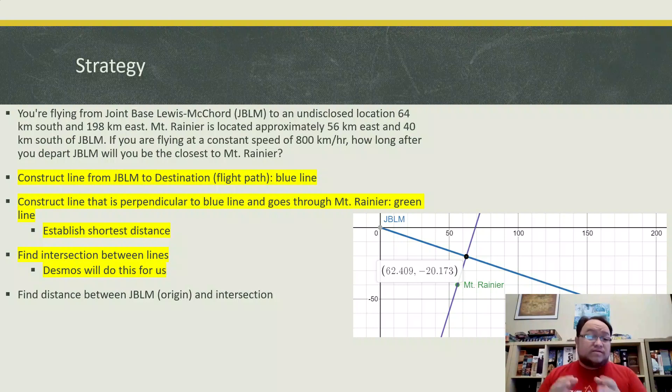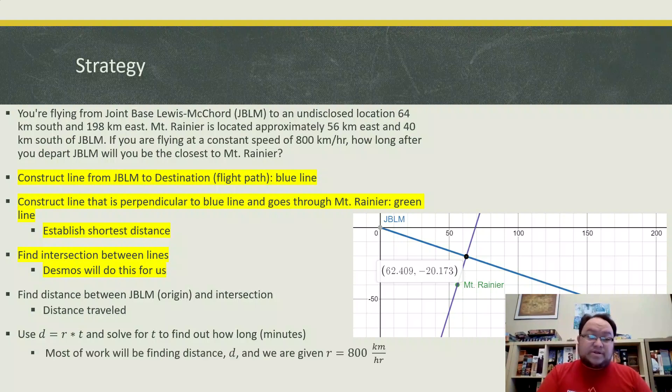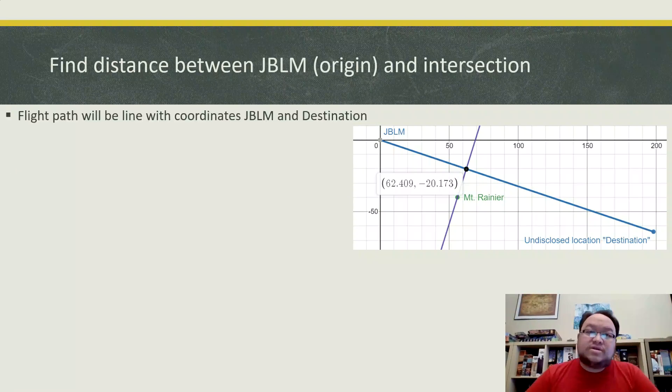What we need to do now is we need to find the distance between that intersection point, 62.409 and -20.173, and the origin. That'll tell us the distance traveled. It'll give us the length of that piece of it. And then once we have that distance, we're going to use our formula d equals rt in order to figure out how long that is to solve for t.